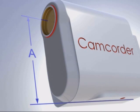The A dimension is from the center of the camera lens to the very bottom of the camera.